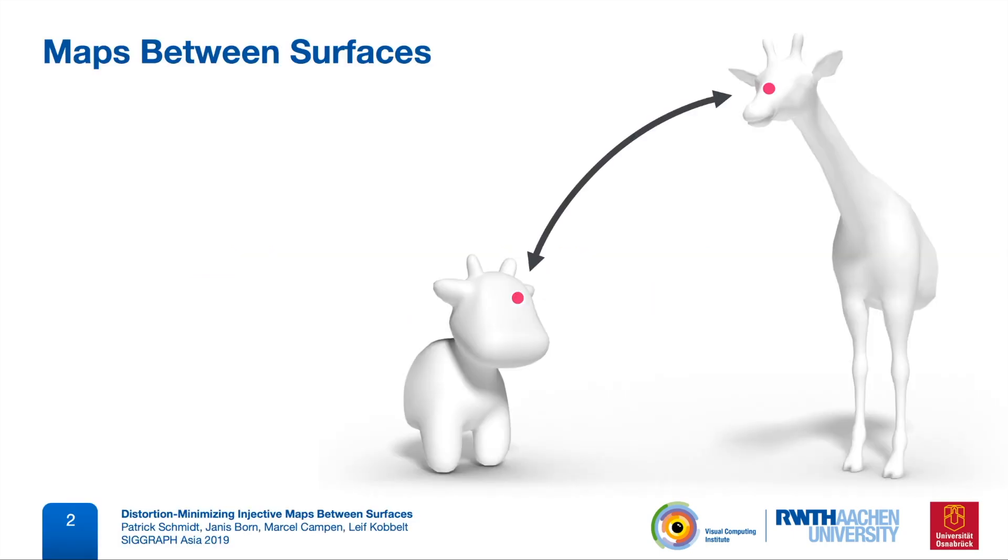We are interested in computing and optimizing maps between the surfaces of 3D objects. Such a map takes a point on one surface and uniquely defines a corresponding point on the other surface, and also the other way around in case we have a symmetric map.